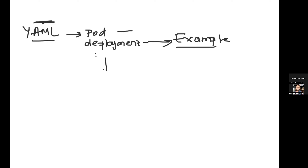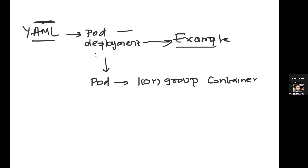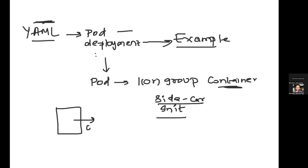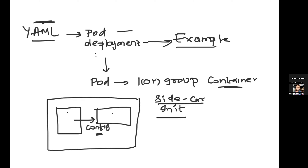A pod is one or a group of containers. Most of the time a pod is a single container, but there are cases where you have sidecar containers or init containers that support your actual container. For example, if your application container needs to read some config files or user-related files from another container, instead of creating two different pods, you can put both in a single pod. Kubernetes ensures that containers within the same pod get shared networking and shared storage.